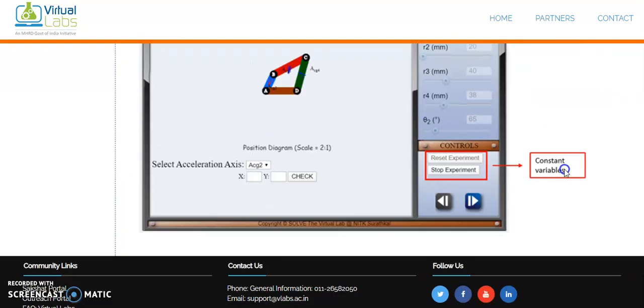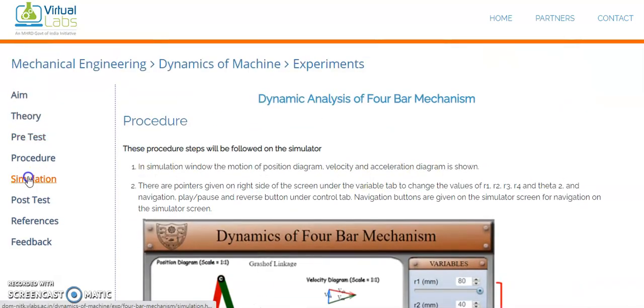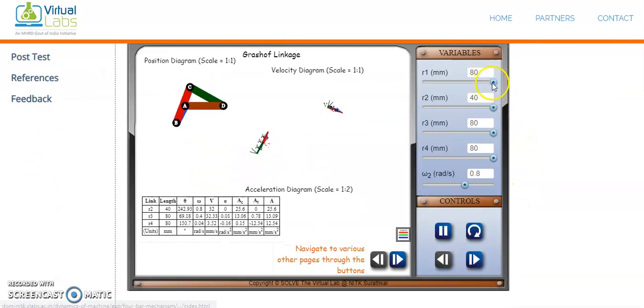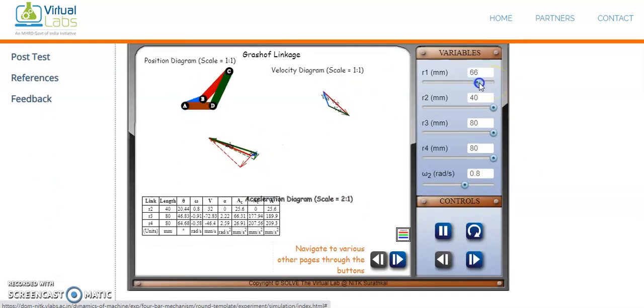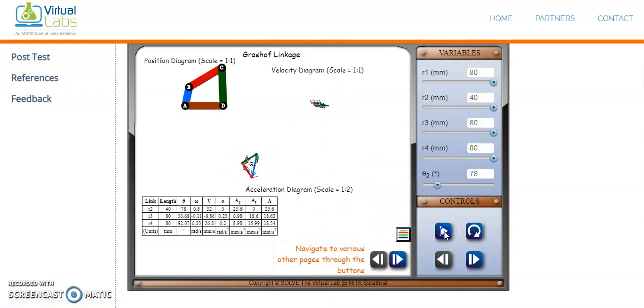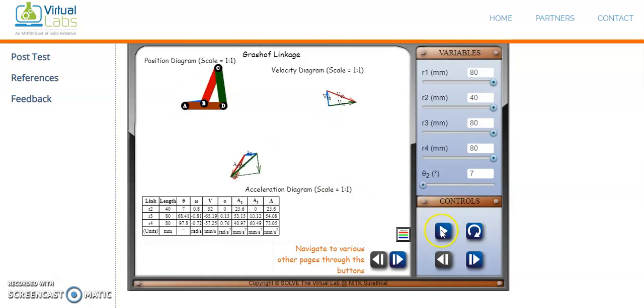Let me start with the simulation. This is the simulation bar. Initially, for the given values, there is a knob for every variable. We can adjust that knob. I am not going to change any of these values. For each value there is a change in diagram. I can pause at any point of time. If I pause at a different angle or position, I will get a different velocity and acceleration diagram.